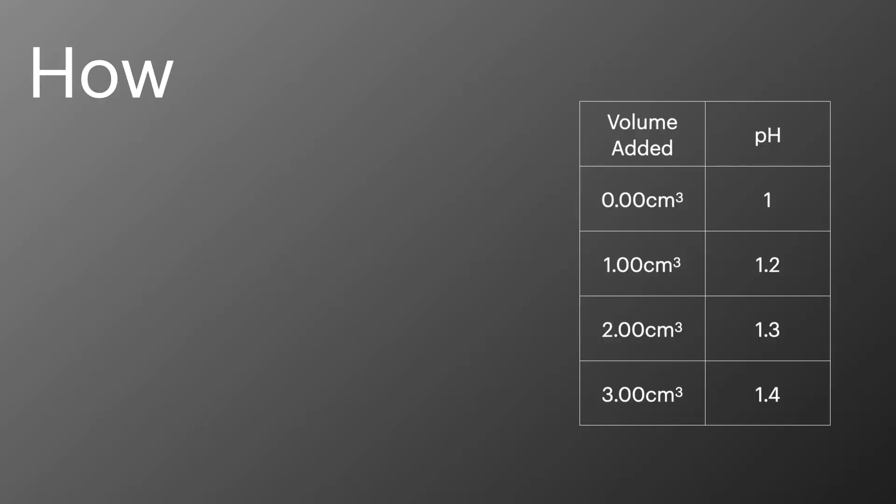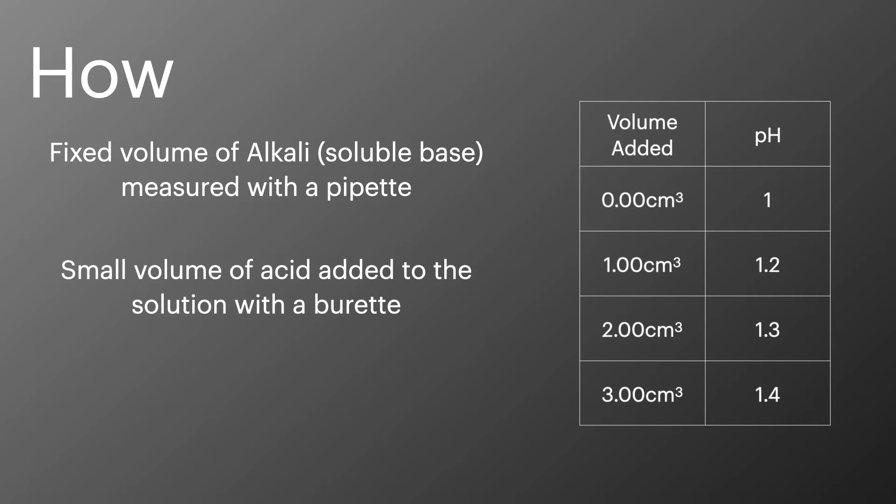Creating a pH curve is a relatively simple but time-consuming process. Equipment is set up in the same way as a titration, starting with a fixed volume of soluble base. Then a small amount of acid is added from a burette, usually one centimeter cubed, although it's good practice to add smaller amounts closer to neutralization.